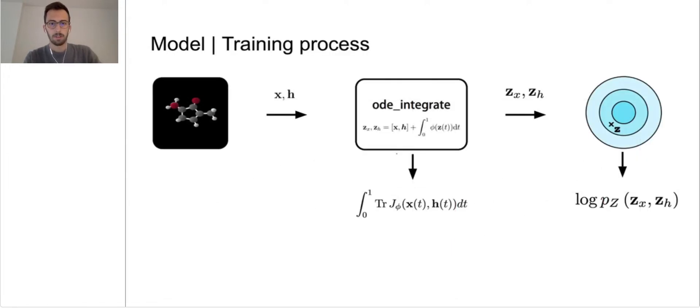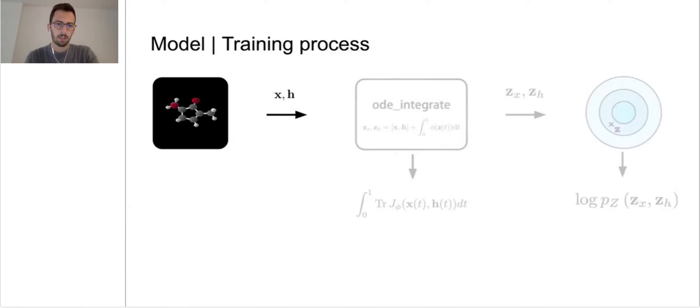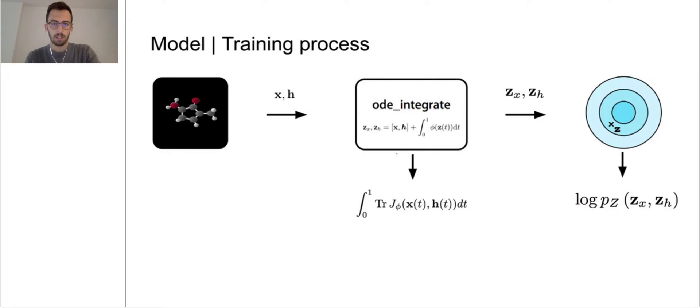The normalizing flow defined by this ODE function then works as follows. First, we sample a point (x,h) from the dataset. We forward it through the ODE function, which outputs the z values and the log determinant of the Jacobian. Finally, we obtain the log likelihood of z from a predefined probability distribution, for example a Gaussian distribution, and then finally we obtain the likelihood of the data p(x,h) from these terms.